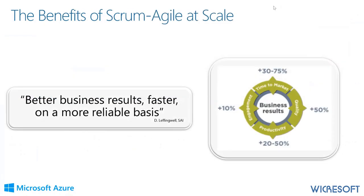Dean Leffingwell himself stated that what we're really after is supporting businesses to have better business results, faster, at a more reliable basis. All the case studies for Lean Portfolio Management deal with four major improvement metrics: time to market, quality, productivity, and engagement. From a customer perspective, the most important are time to market and quality, which translate immediately to a higher NPS score and eventually greater cash flow. Productivity and engagement are internal KPIs, equally important in order to deliver value.